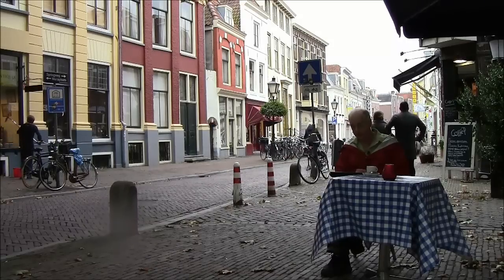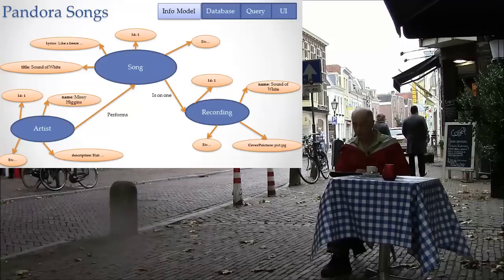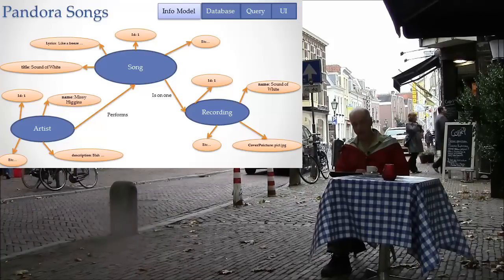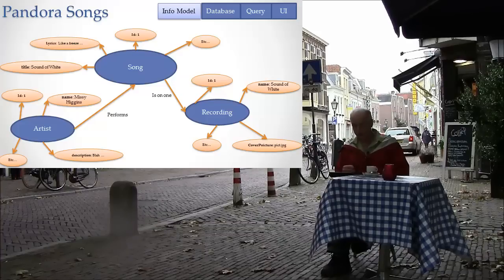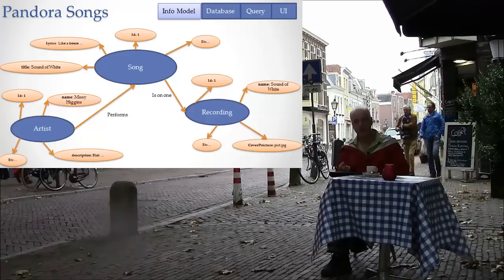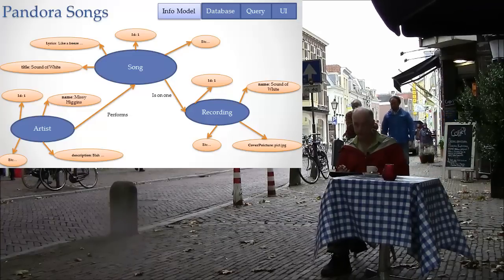Let's start with an example and we'll take Pandora songs. You've seen diagrams like this before, but let me go over it quickly. There are three types of information in this information model: the song, the recording, and the artist. And if you spend a little time looking around in here, I'm sure this will be pretty obvious to you, even if the mechanics of information modeling are strange to you — this diagram should be relatively straightforward.